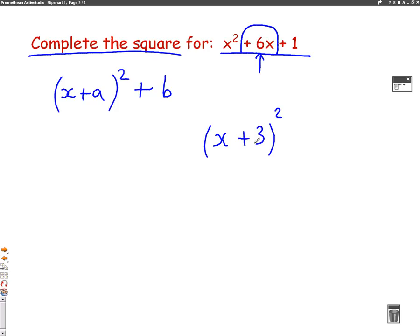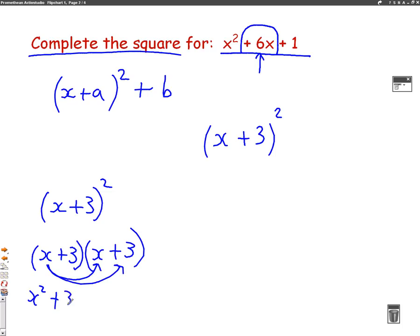Now, the reason this works, as you'll see in a minute, is if we have x plus 3 squared, well, what we've actually got is x plus 3 times x plus 3. And when we multiply this out, expand the bracket, we will get x squared plus 3x plus another 3x, and at the end, plus 9.